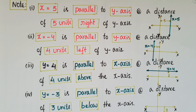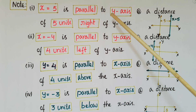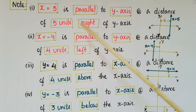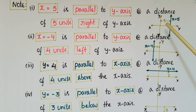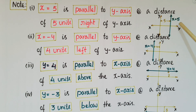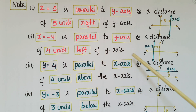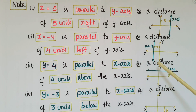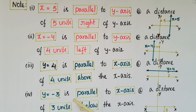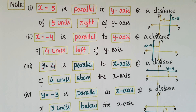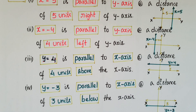Please remember these key points: x = 5 is parallel to the y-axis at a distance of 5 units to the right of the y-axis, because 5 is positive. x = -4 is parallel to the y-axis at a distance of 4 units to the left of the y-axis. y = 4 is parallel to the x-axis at a distance of 4 units above it. y = -3 is parallel to the x-axis at a distance of 3 units below it.